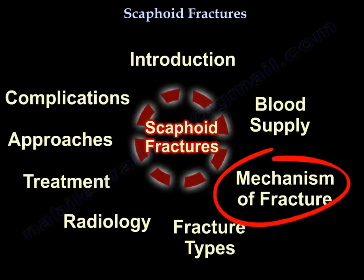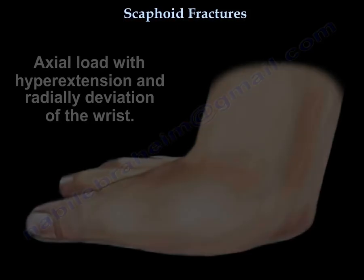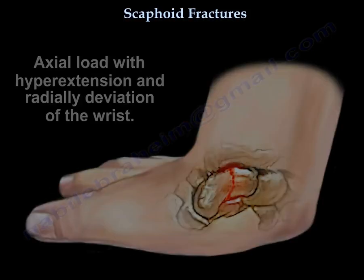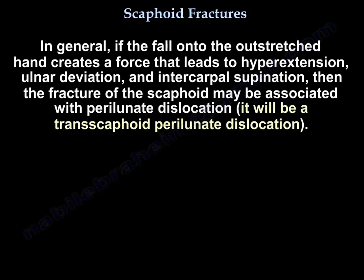Mechanism of Fracture: axial load with hyperextension and radial deviation of the wrist. In general, if a fall onto the outstretched hand creates a force leading to hyperextension, ulnar deviation, and intercarpal supination, then the fracture of the scaphoid may be associated with perilunate dislocation — a trans-scaphoid perilunate dislocation.